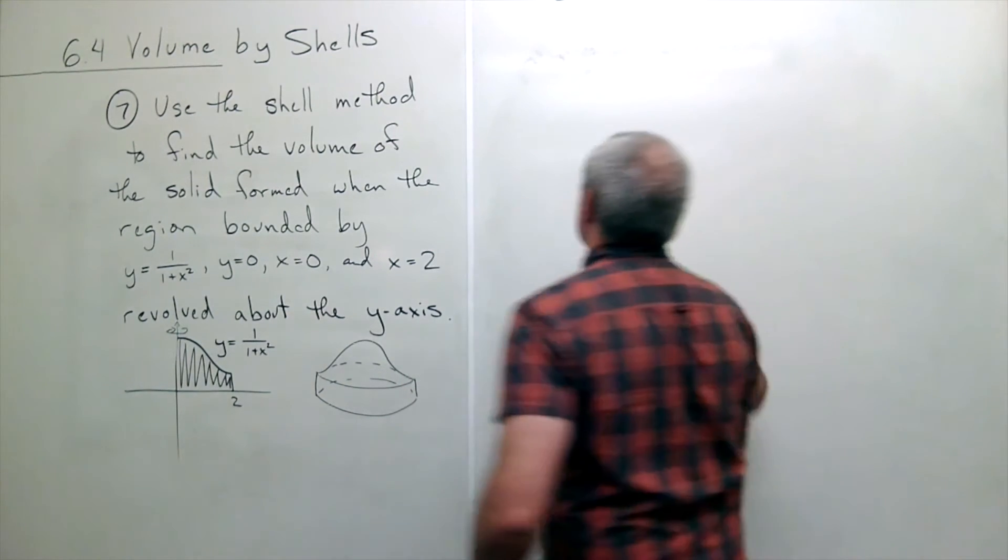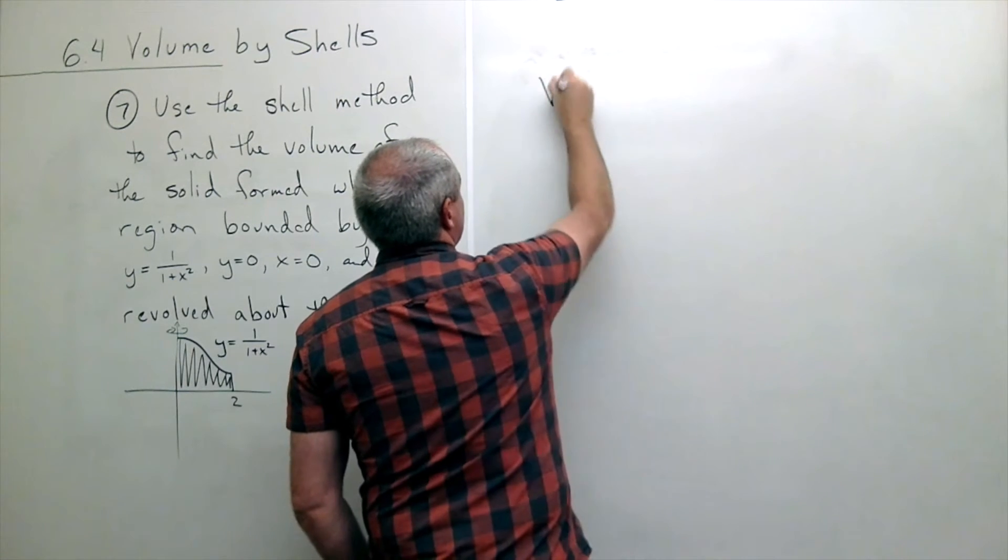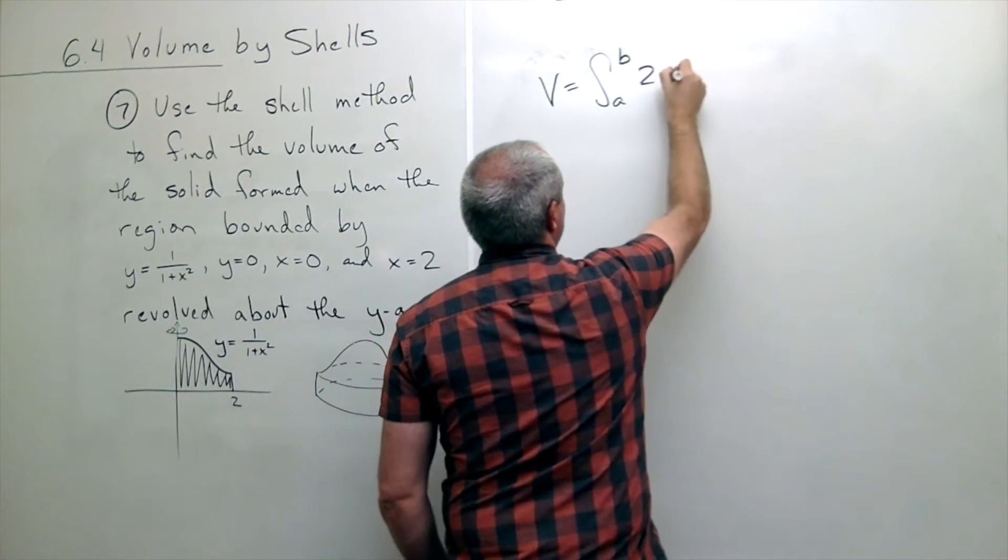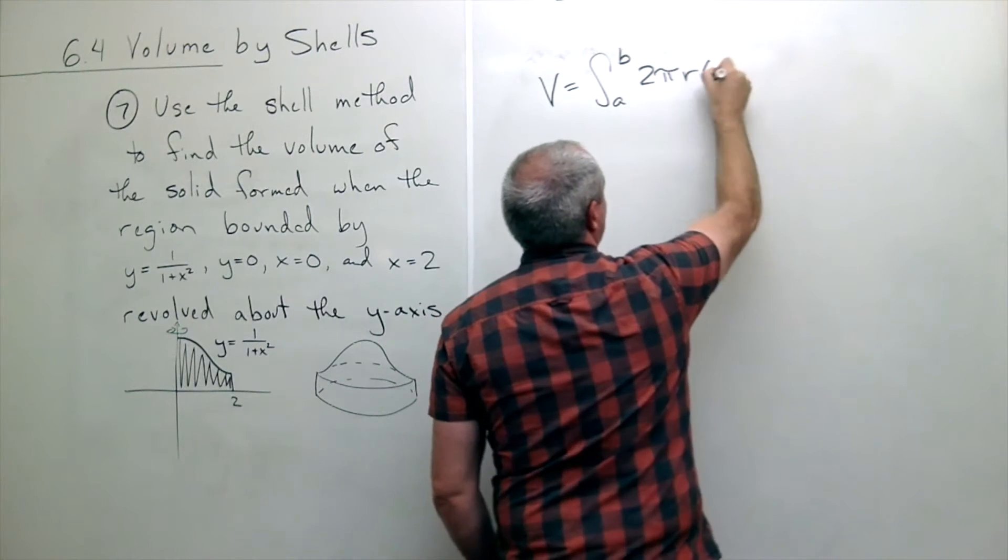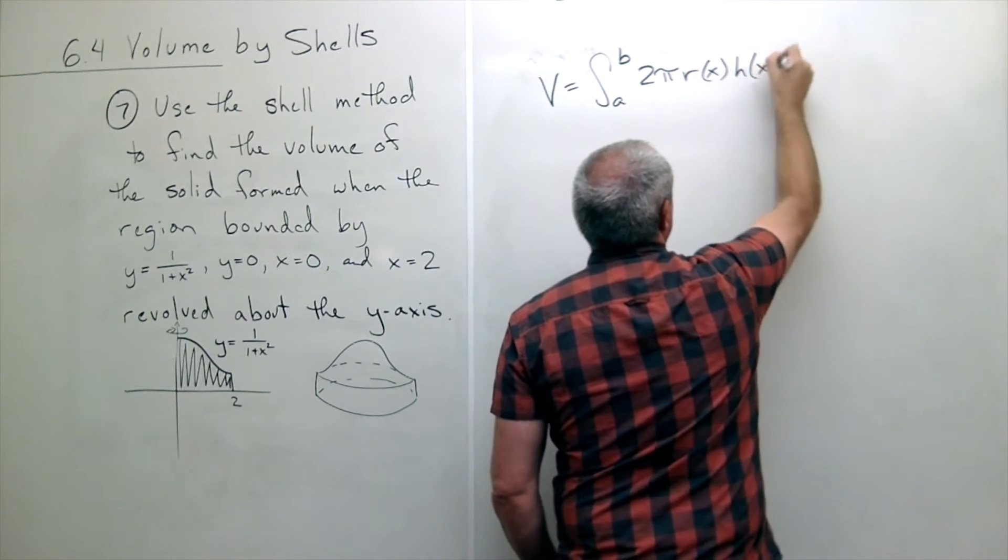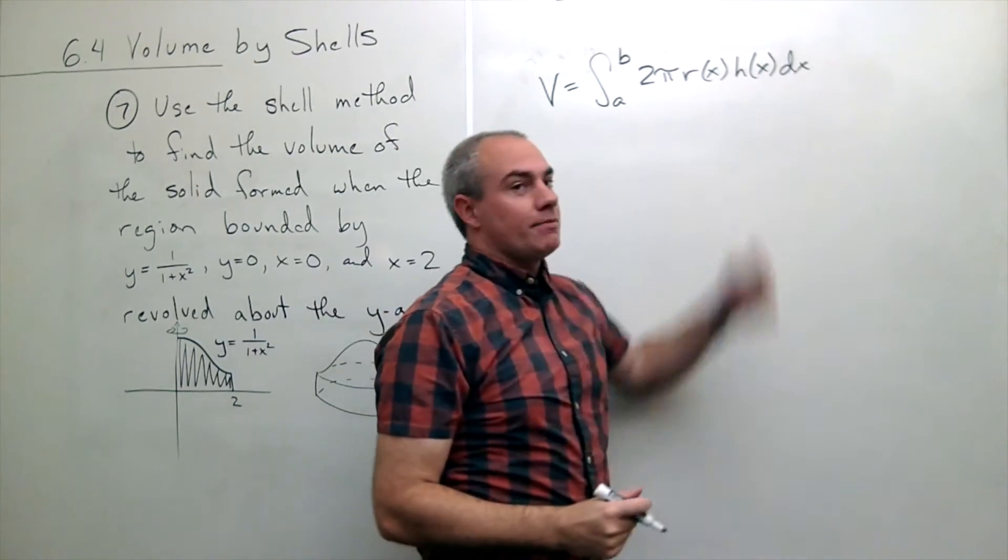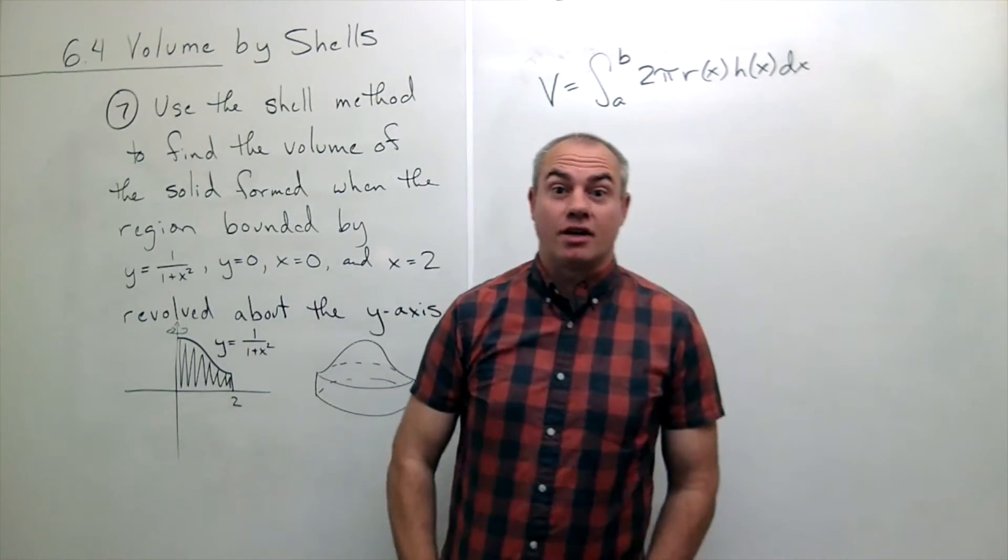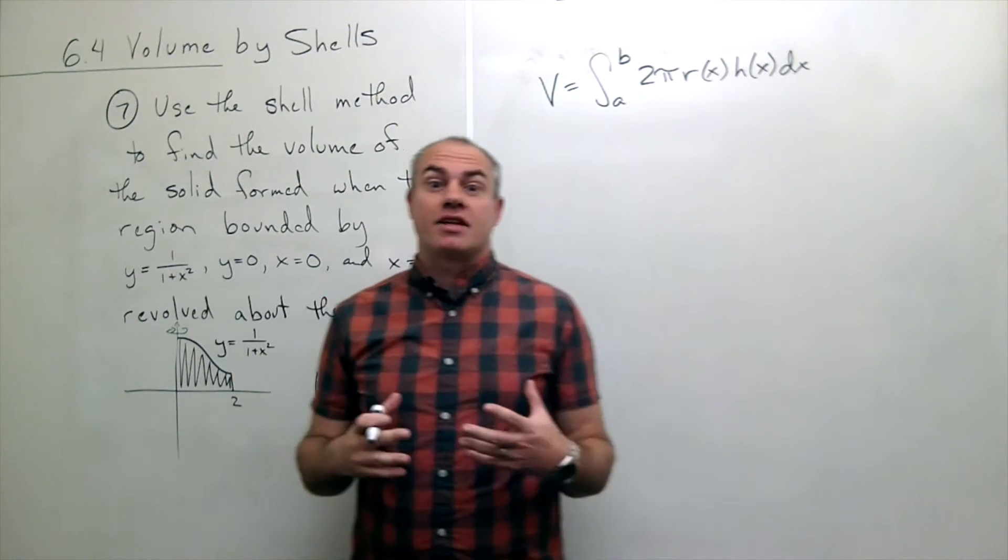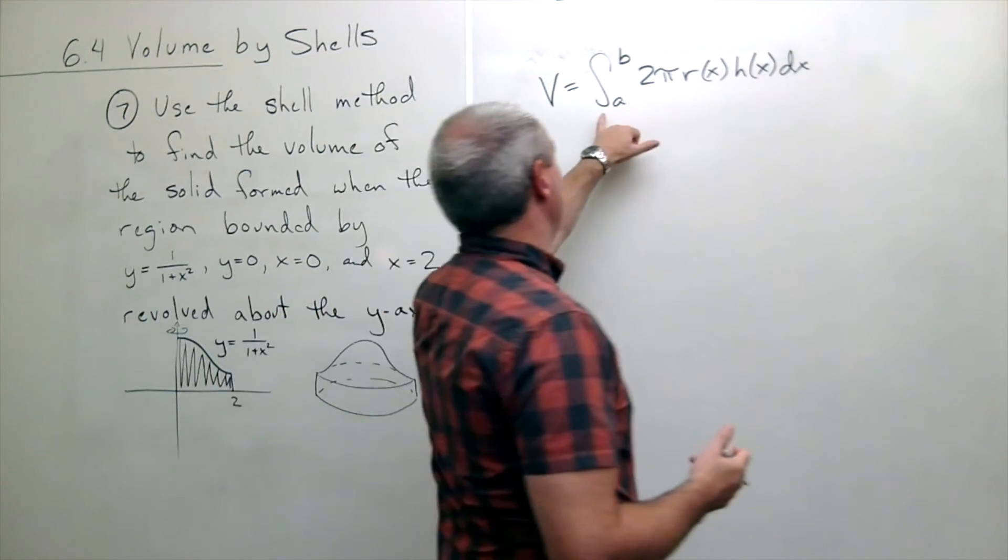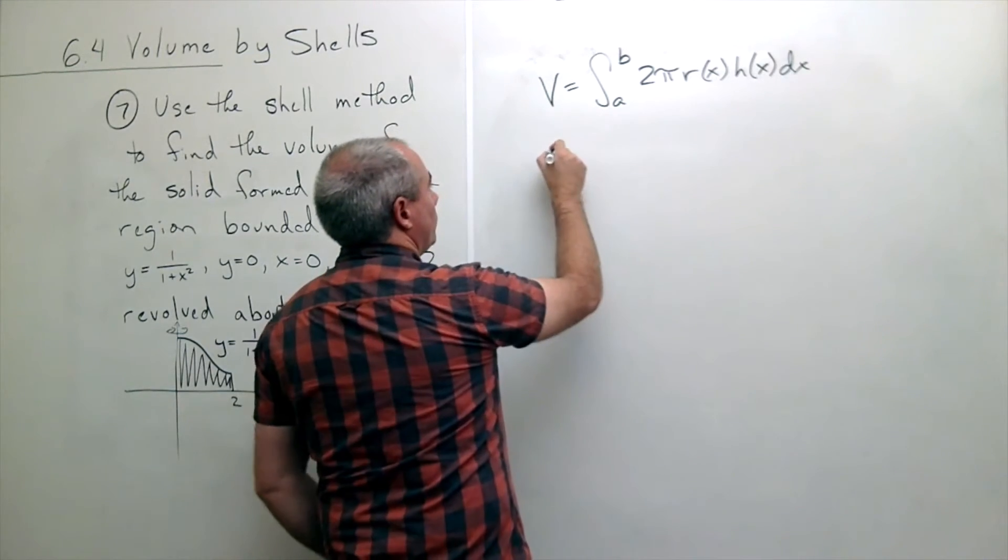And again let's review. We've got volume is the integral from a to b of 2 pi r h dx. So 2 pi radius times height. And remember that's just the area of the outside of a cylinder. So it's easy to remember. So we just need to plug in what we know here.